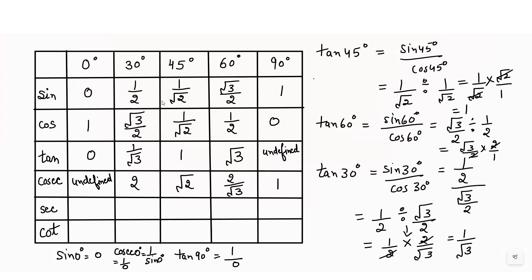Secant theta is the reciprocal of cos theta. So sec 0° = 1/1 = 1, sec 30° = 2/√3, sec 45° = √2, sec 60° = 2, and sec 90° = 1/0, which is again undefined.